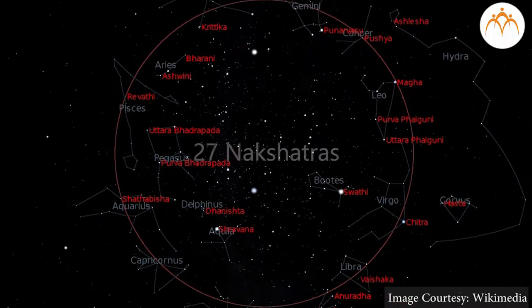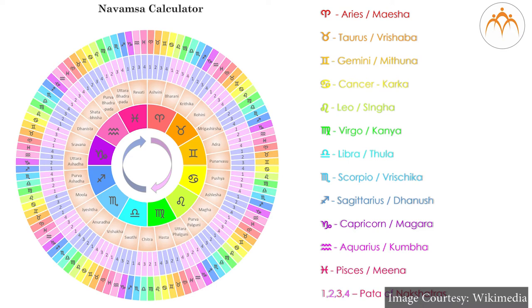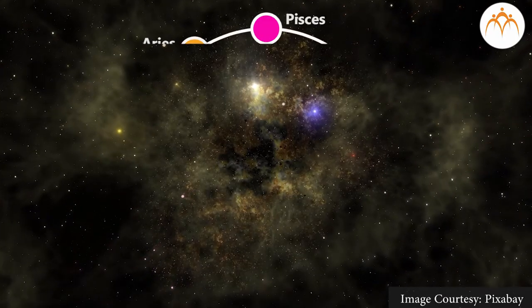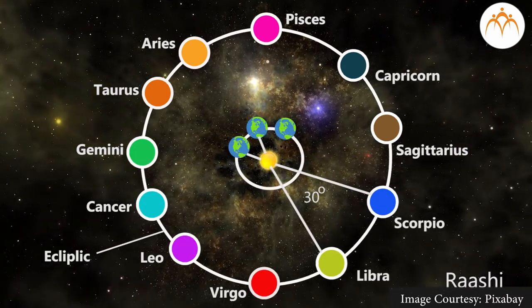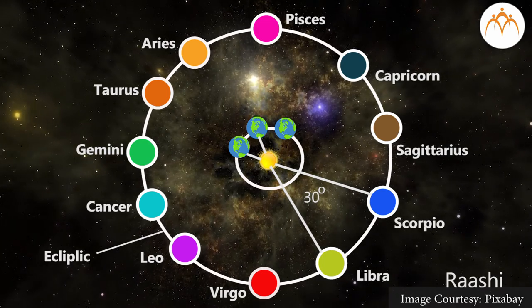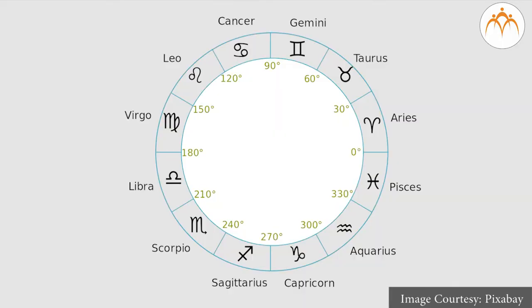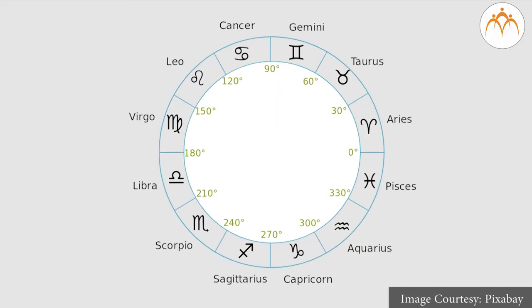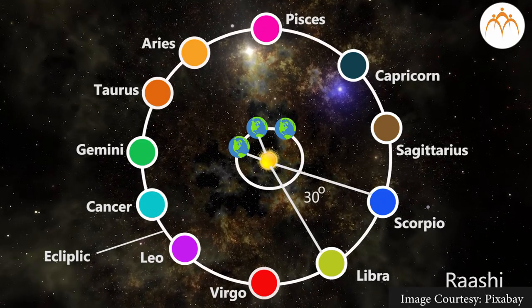Our Indian astronomers put forth the idea of 27 nakshatras. In zodiacal constellations, the ecliptic is divided into 12 equal parts, each known as a rashi or zodiac sign. The names of the zodiac constellations are: Aries, Taurus, Gemini, Cancer, Leo, Virgo, Libra, Scorpio, Sagittarius, Capricorn, Aquarius, and Pisces.